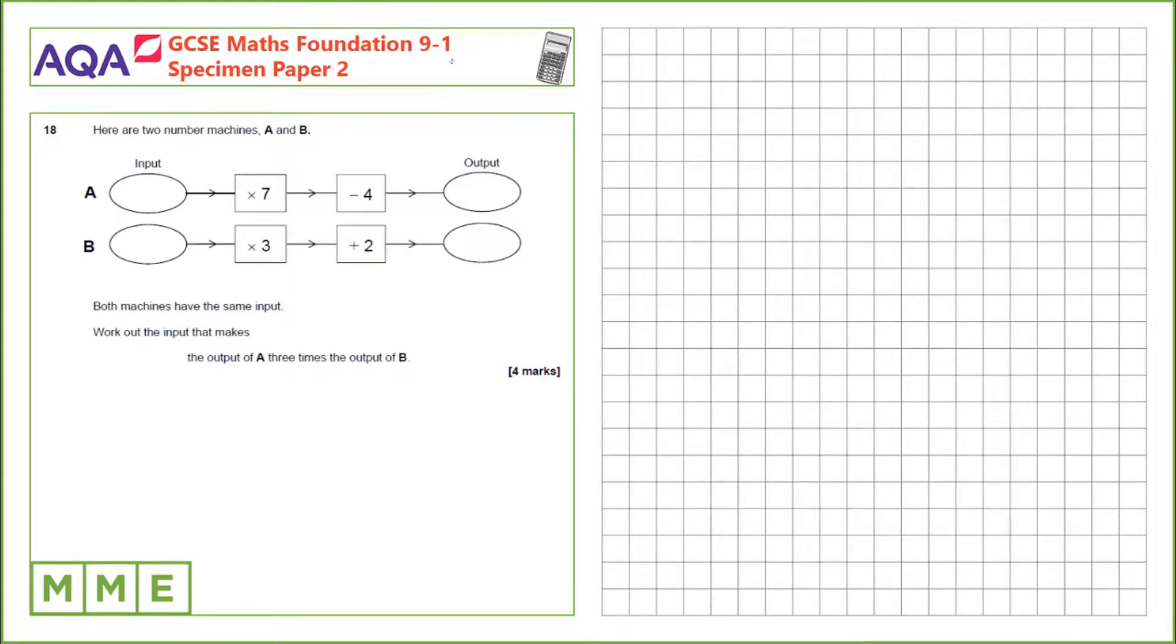Question 18. Here are two numbered machines, a and b. Both machines have the same input. Work out the input that makes the output of a three times the output of b.